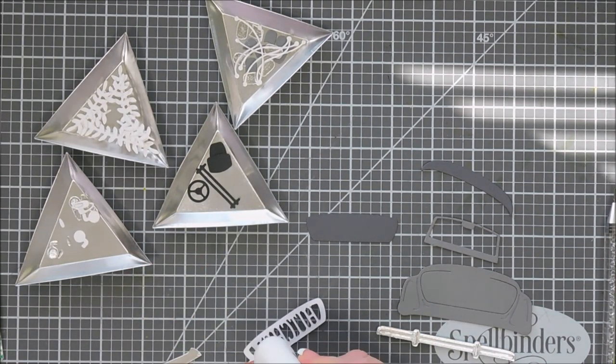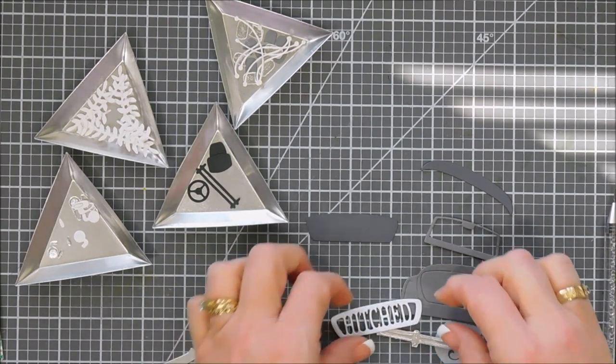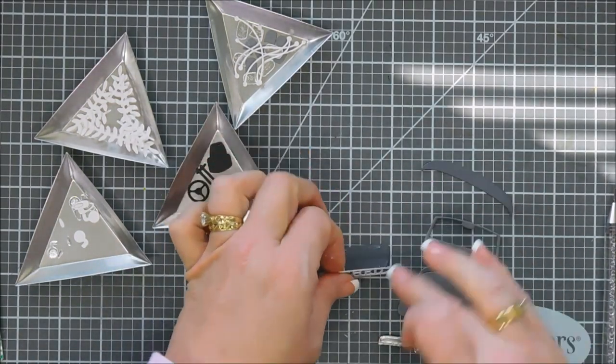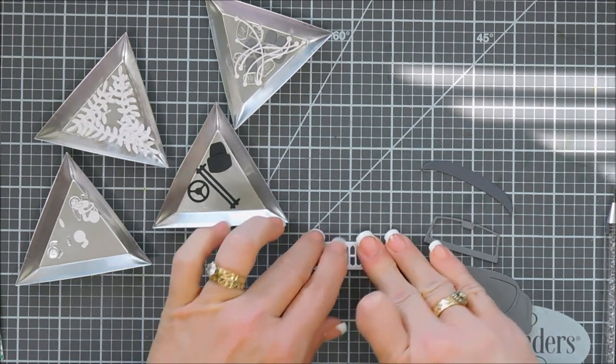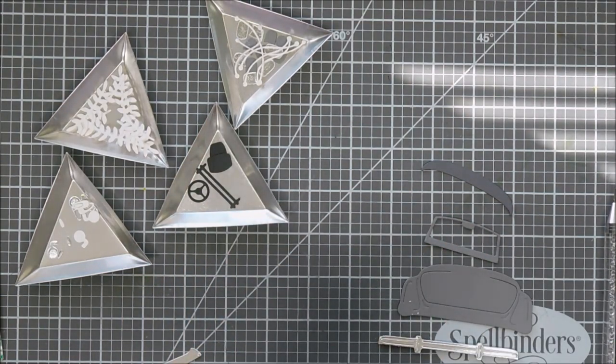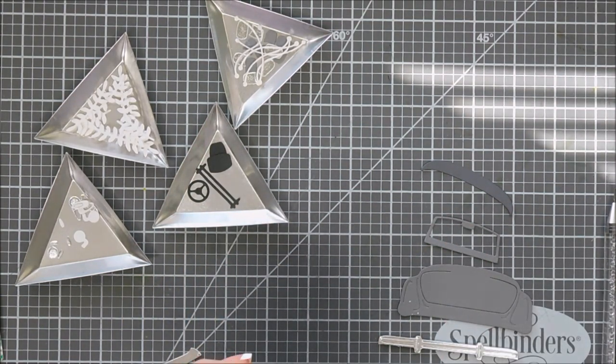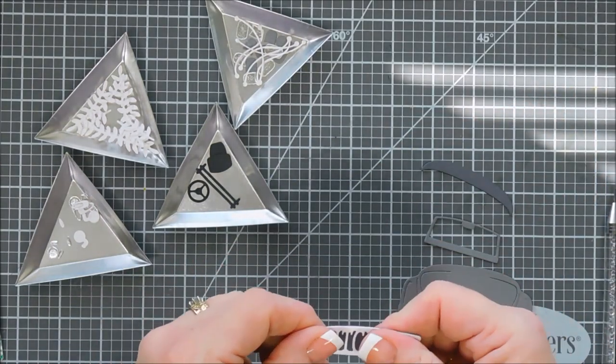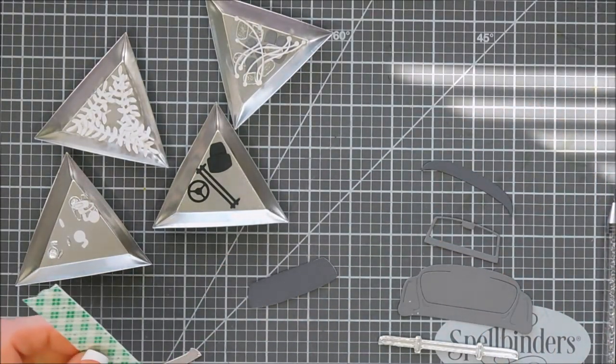We're going to put the darkest behind our sentiment here, we'll just add a little glue. Let's build our card. It's super easy to build - you think all these little pieces might be a little bit difficult, but it really is super easy. I added my sentiment, I'm going to go ahead and pop it up with foam adhesive.